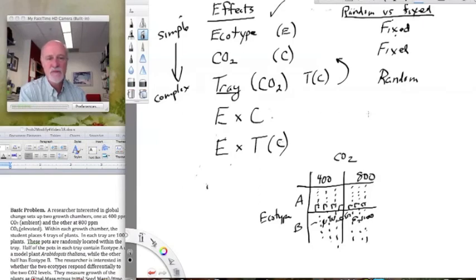How about ecotype cross CO2? If we have a cross of two fixed effects, then that is also fixed. But if we have ecotype cross tray, and tray is random, the cross of anything with a random effect is random. All it takes is one random effect, in this case tray, to make this entire term a random effect.